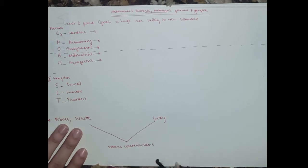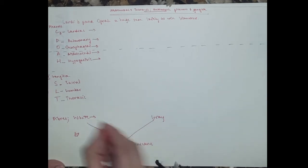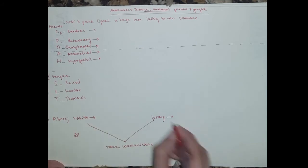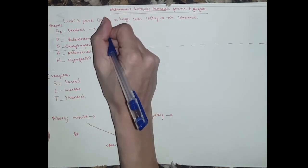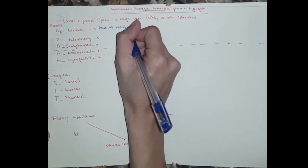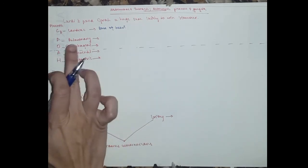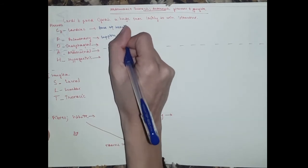Okay, so white ramus communicans and grey ramus communicans. All right, now we can start. So the cardiac plexus, I've written Cardi B because the cardiac plexus lies at the base of the heart.